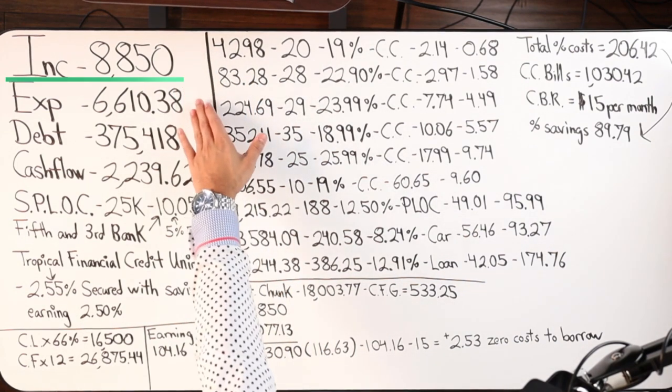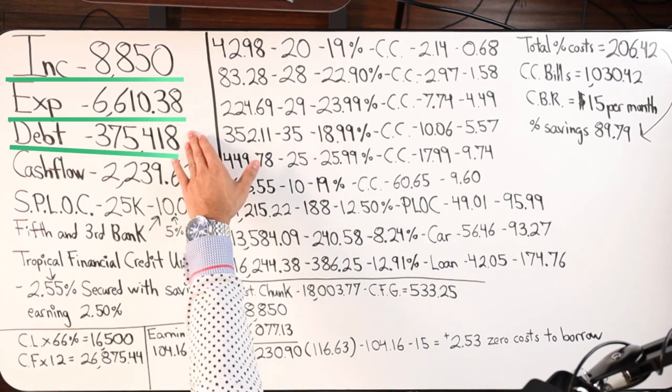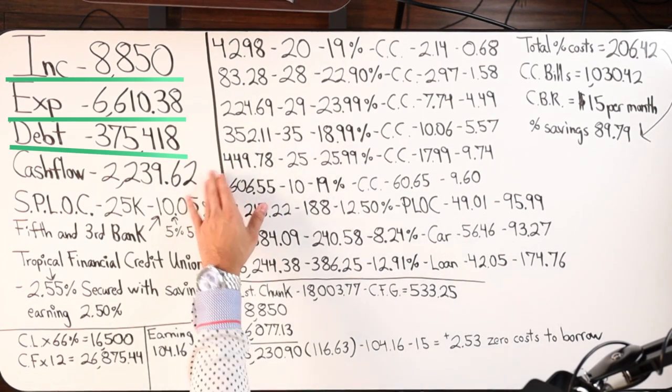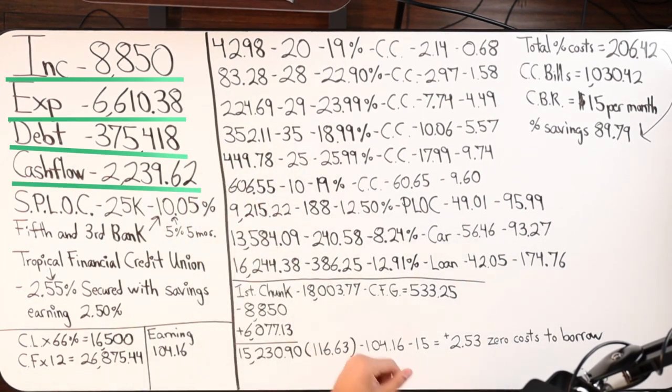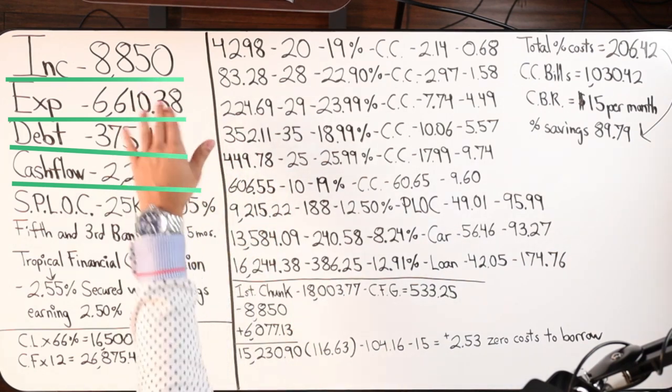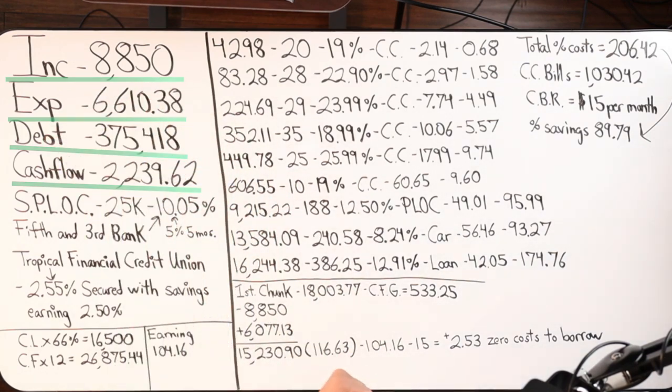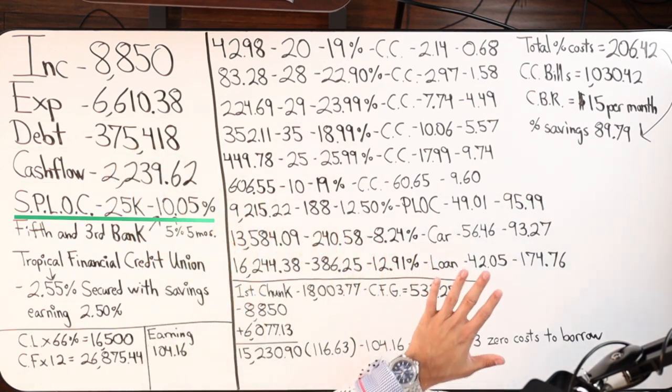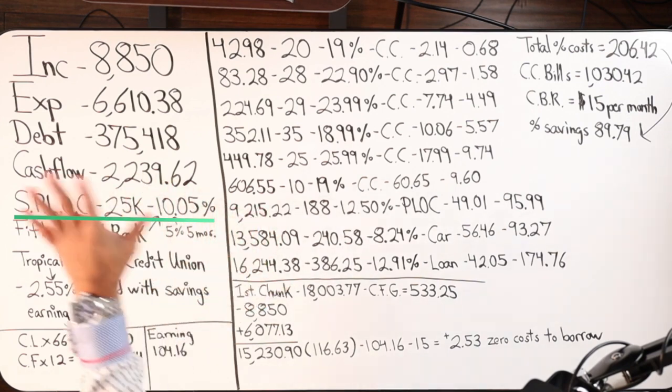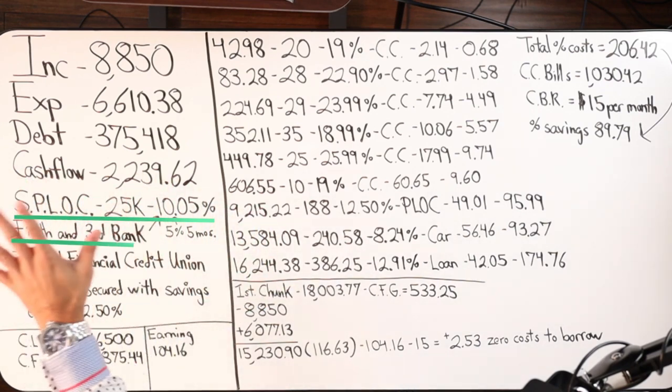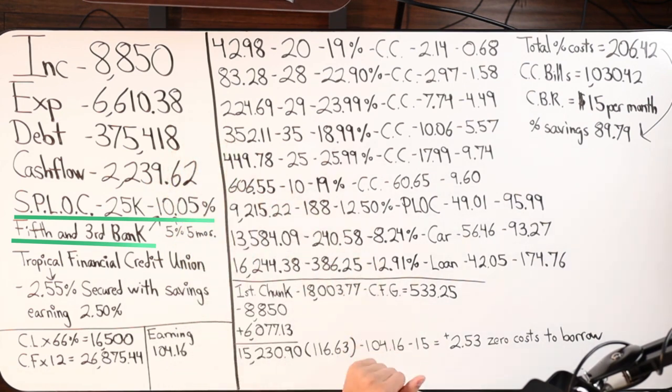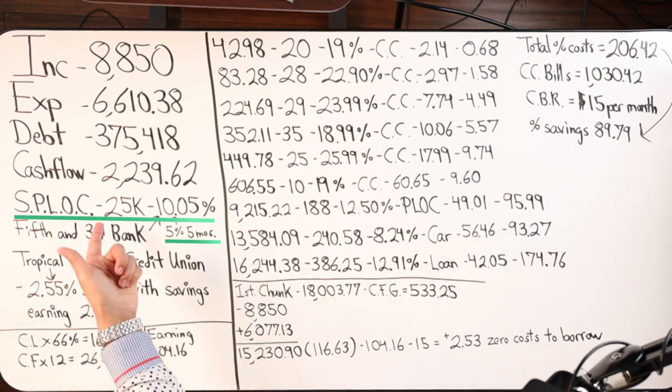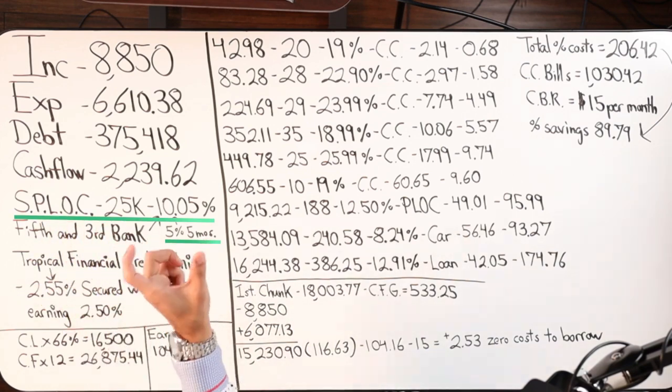This is a client I'm working with in the state of Florida. So we're dealing with Florida banks. Although I think Fifth and Third Bank might do business in a couple other states if I'm not mistaken. So here's our income. Here's our expenses. Total debt, $375K. We've got around $2,200 in cash flow, making good income, and we have a nice gap between what we make and what we spend.